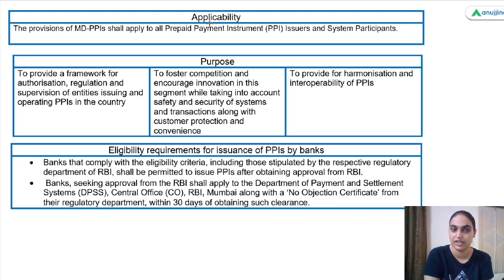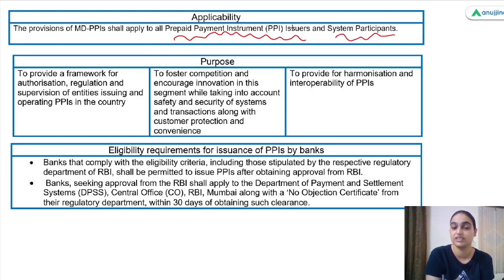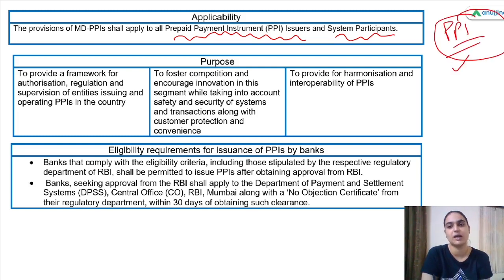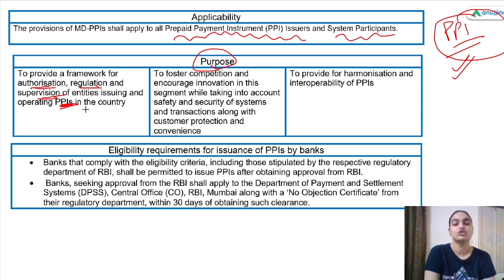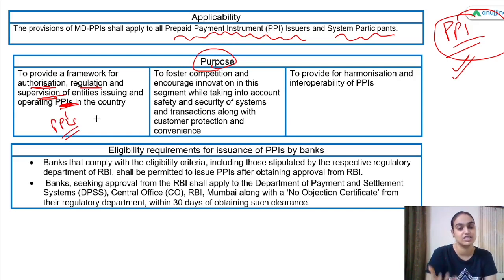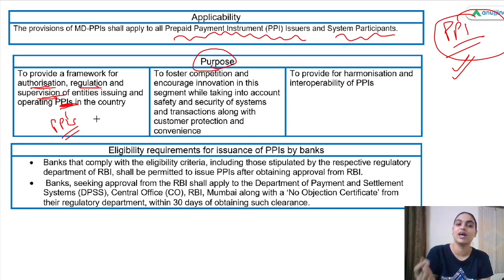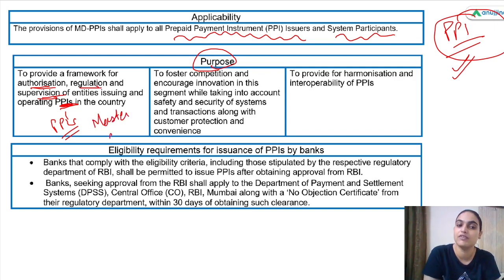First, the master directions talk about applicability — these directions are applicable for all prepaid payment instrument issuers and system participants. All companies and banks that issue PPIs are covered. Talking about the purpose of these directions, they provide a framework for authorization, regulation and supervision of PPI issuers in the country — giving approval, setting rules and regulations, ensuring compliance, and supervising those entities.